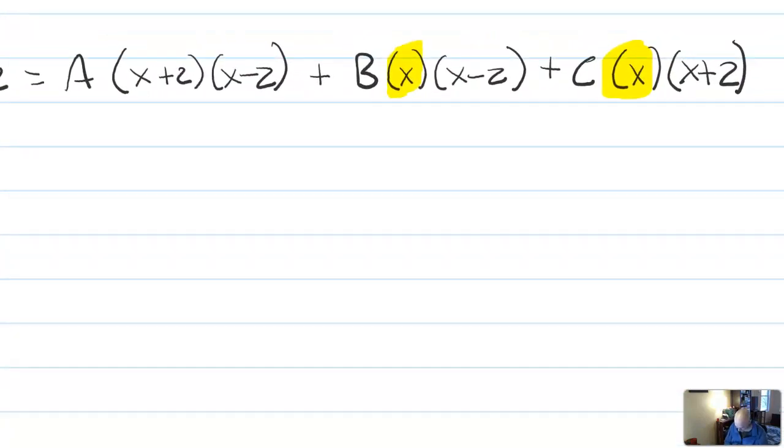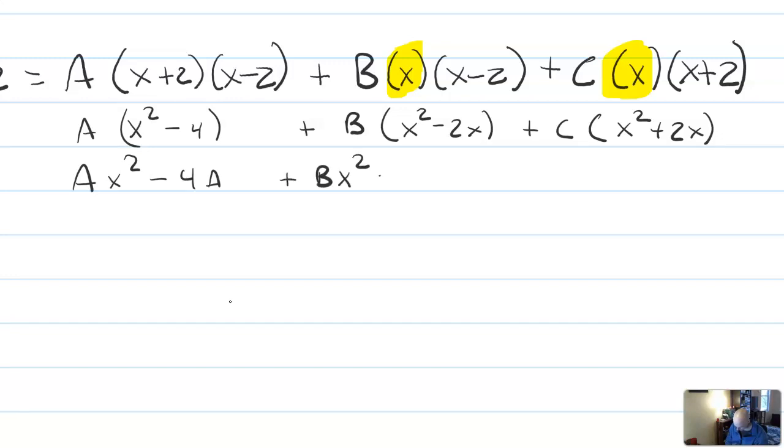So the way that works is first you take all these quadratics and multiply them out. So this is x squared minus 4 times a. This is b times x squared minus 2x. And this is c times x squared plus 2x. And then we say, all right,